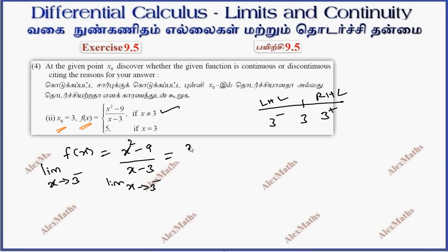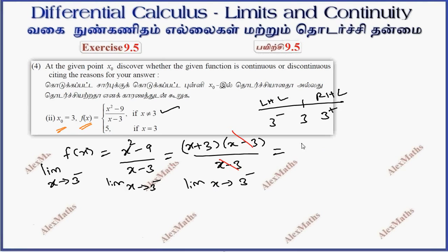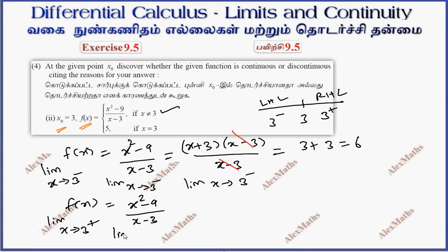We factorize the numerator as x plus 3 into x minus 3, divided by x minus 3. Now x minus 3 cancels. Limit extending to 3 minus, substituting 3 gives 3 plus 3, which is 6. For the right-hand limit, limit extending to 3 plus, x squared minus 9 by x minus 3 also works out to 6. But the function value f(3) is 5.